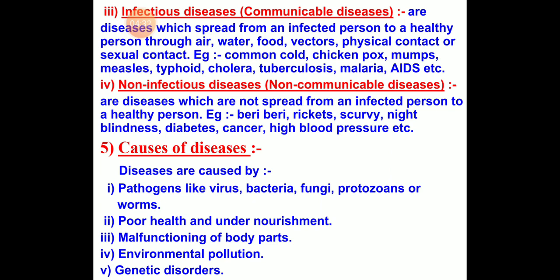Poor health and under-nourishment: If our health is poor or we are not getting proper food containing a balanced diet — carbohydrates, proteins, minerals — if we are not getting all these nutrients in proper amounts, then we will also be susceptible to different kinds of diseases. Malfunctioning of any body parts — our liver, heart, or kidneys not working properly. Environmental pollution, which is increasing day by day, also causes disease. Genetic disorders which we inherit from our parents are also a cause.